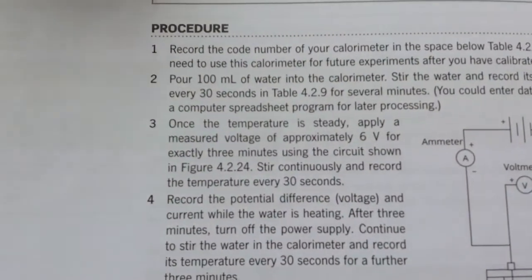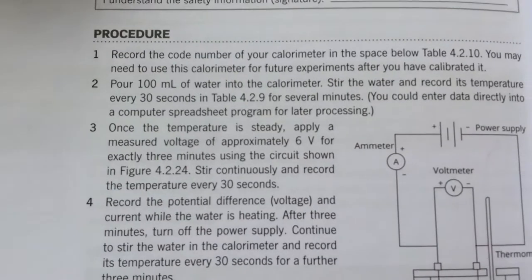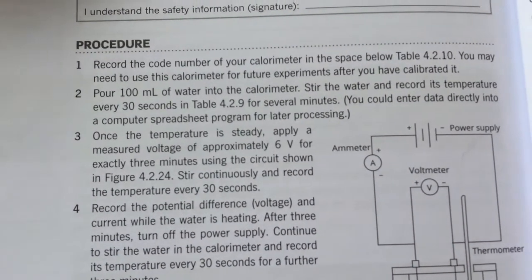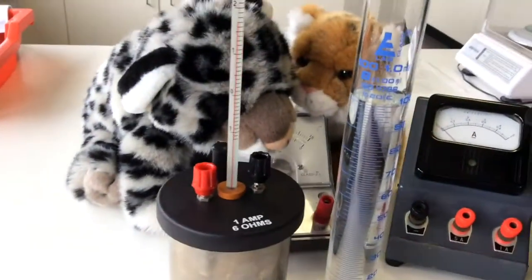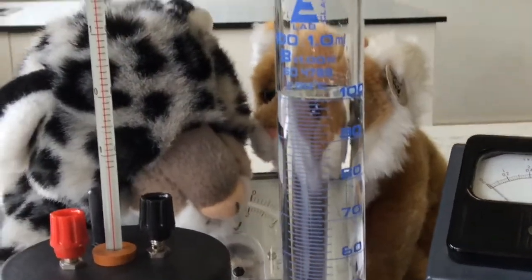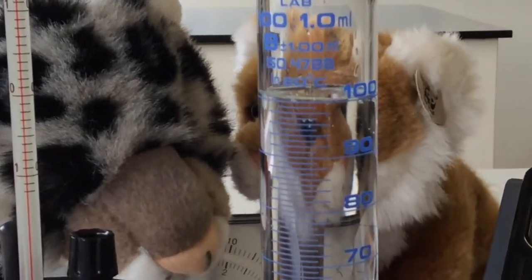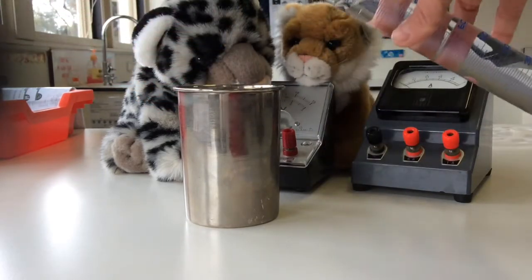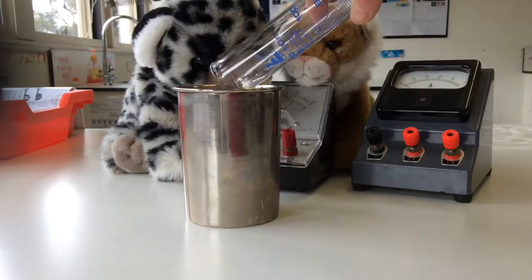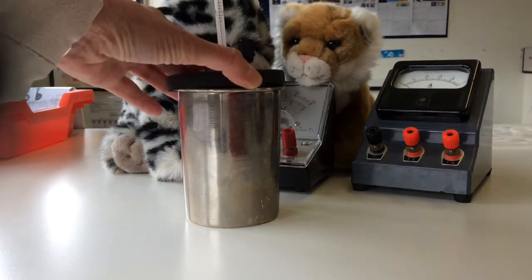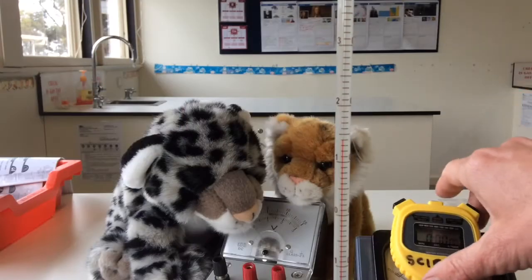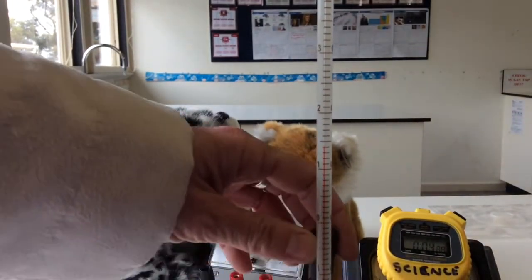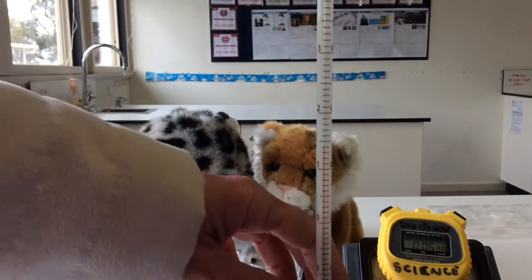And then it says pour 100 ml of water, stir the water, and record every 30 seconds. And basically, that's until you've got a constant temperature. So I've measured out the 100 ml. Okay, I've just added the water.